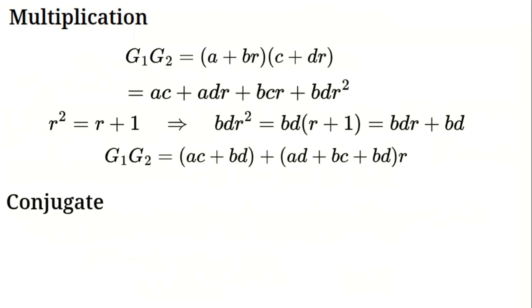Conjugate. The conjugate helps us measure numbers for G equals A plus BR. The conjugate is a plus B minus BR. That's a plus B for the real part and negative B times R for the golden part. On the plane, AB moves to A plus B, negative B. This sets up the modulus.